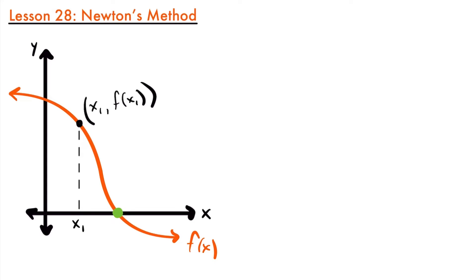If we were to draw a tangent line at that x-value of x1, we would see that it crosses the x-axis at about right here. This tangent line has the same slope as the point on the function — we just extended it. We can see that the tangent line crosses the x-axis at a point fairly close to where the actual x-intercept is. This point we would call x2 — our approximate value of what we believe to be our x-intercept.